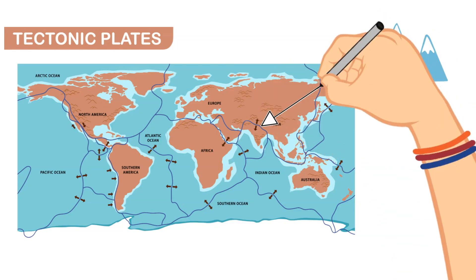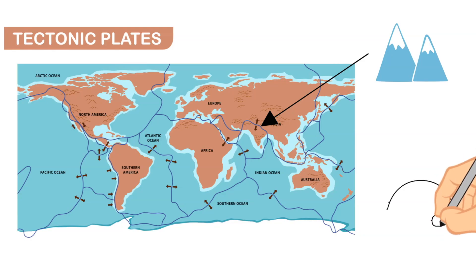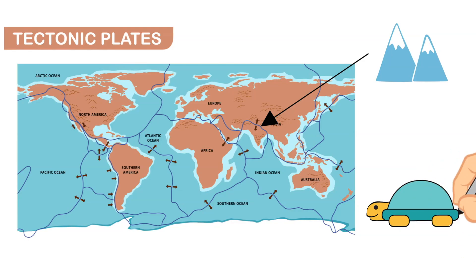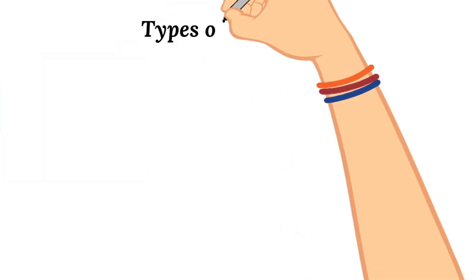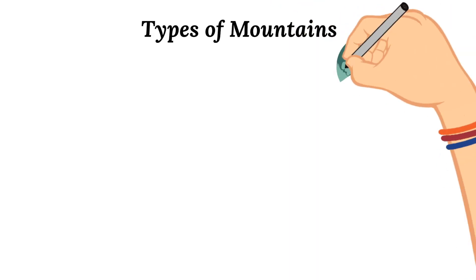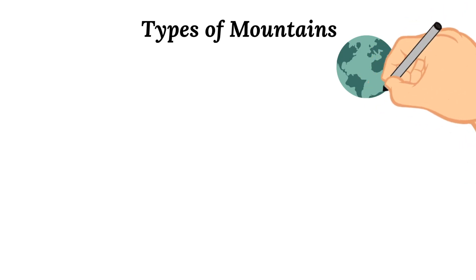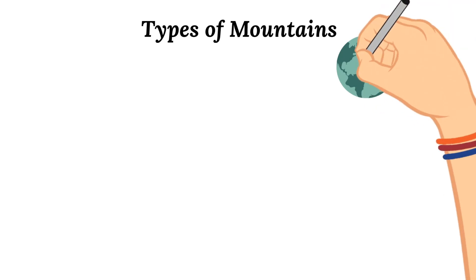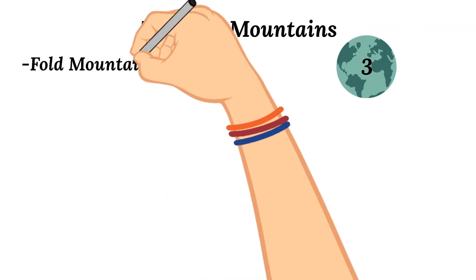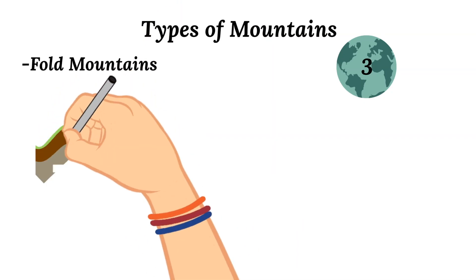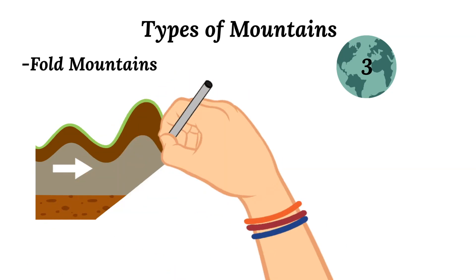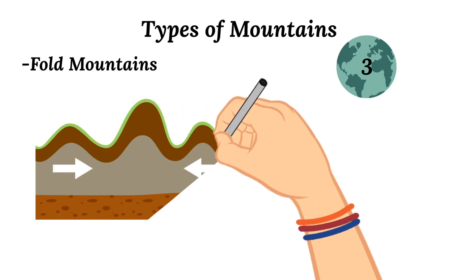Tectonic plates move very slowly, and it can take a very long time for mountains to form. There are three different types of mountains, and they get their names by how they are formed. The first are fold mountains. Fold mountains are formed when two plates run into each other, and the force of these two plates running into each other can cause the earth's crust to crumple or fold — hence the name fold mountains.